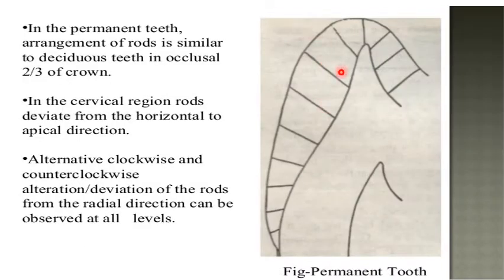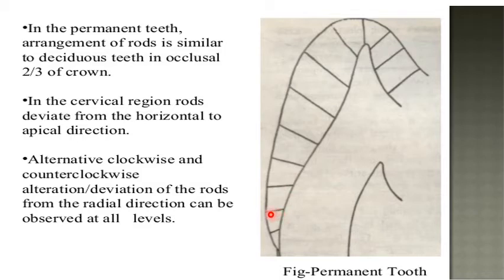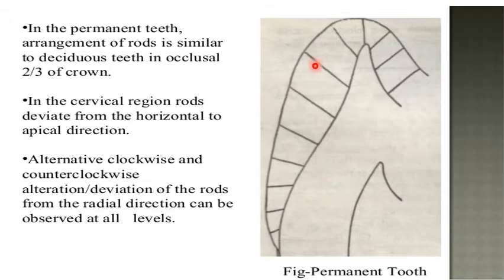In permanent teeth, the arrangement of the rods is similar to deciduous teeth in the occlusal two-thirds. In the cervical region, rods deviate from the horizontal to the apical direction, with alternative clockwise and counterclockwise deviation. This alternating deviation of the rod from the radial direction can be observed at all levels. This knowledge of rod direction is important during cavity preparation — we must know the direction of the enamel rod in the occlusal, middle, and cervical regions of the tooth.